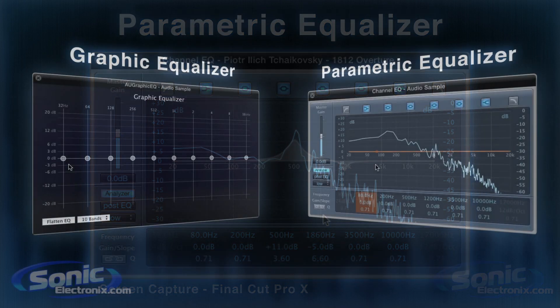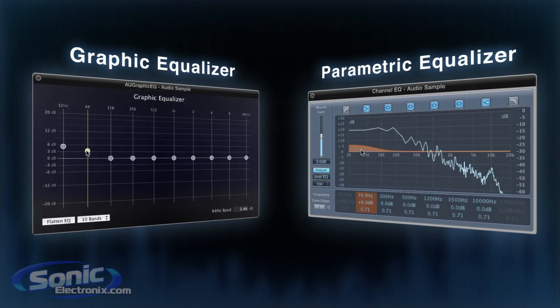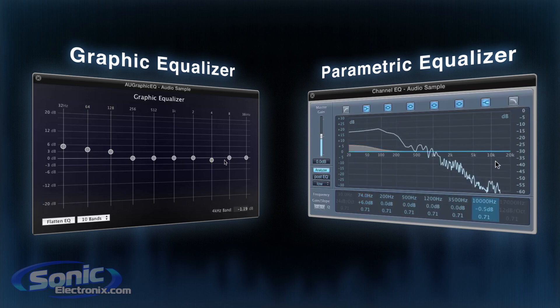For example, when tuning, if you want to make your kick drum louder and hit harder, you would increase the frequencies on the lower end. If the cymbals are too bright, then you'd want to decrease the frequencies on the higher end.